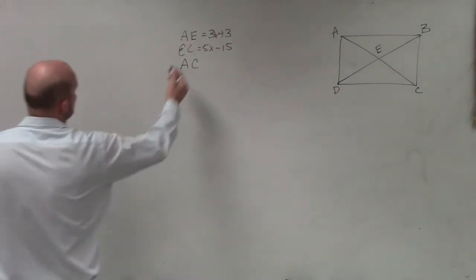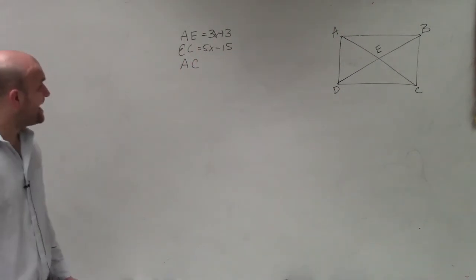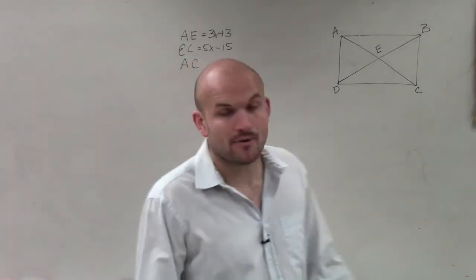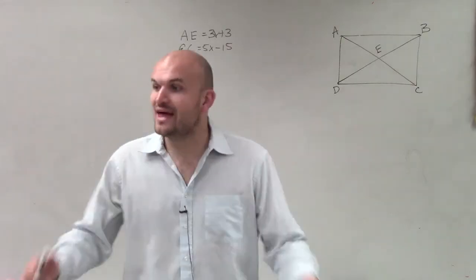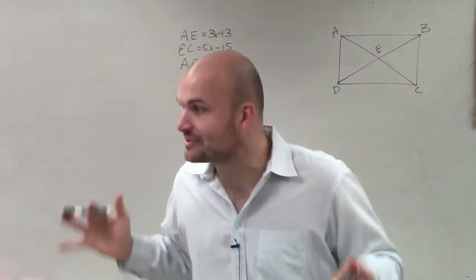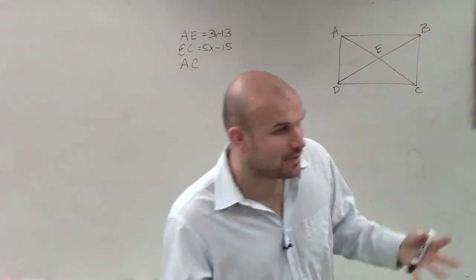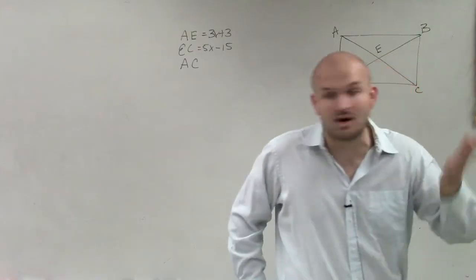So ladies and gentlemen, what we have here is A equals 3x plus 3 and E equals 5x minus 15. Now, the one thing they do tell us is this is a rectangle. Last class we talked about a lot of properties with parallelograms. There's a couple things that we knew that a rectangle was a parallelogram.